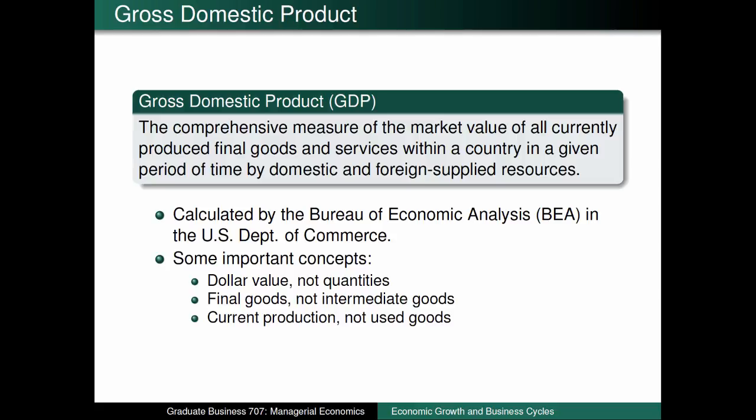Finally, we focus on current production, not used goods. An F-150 purchased in 2012 is included in the United States GDP in 2012. If that truck then gets sold to a second owner in 2017, that value is not reflected in 2017, since we do not want to double count the value of the truck that was already included in 2012's GDP.